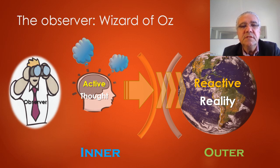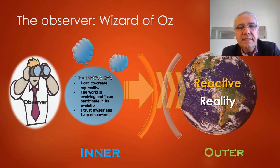Now we have another version, which is the Wizard of Oz version, and that's closer to what quantum physics is telling us is actually happening. And the observer is actually the one that has the active thoughts, and we're going from the inner, the thoughts and the observation, to the outer, and reality is reacting to the observer. So the causation goes from the inner to the outer. So that's more of what quantum physics tends to suggest. And in this case, the implicit message that is conveyed to us is that I can co-create my reality, the world is evolving, I can participate in its evolution, I trust myself, and I feel empowered.